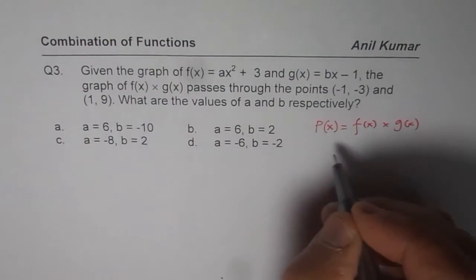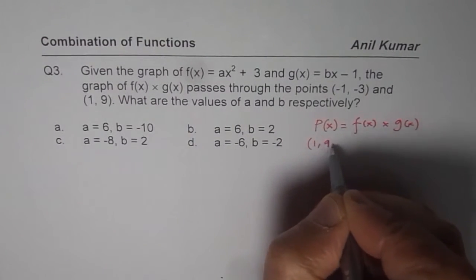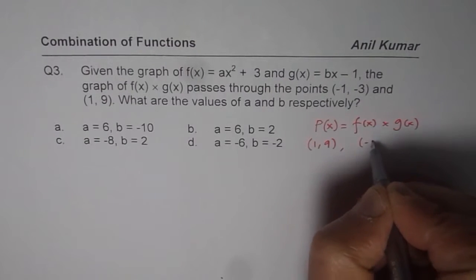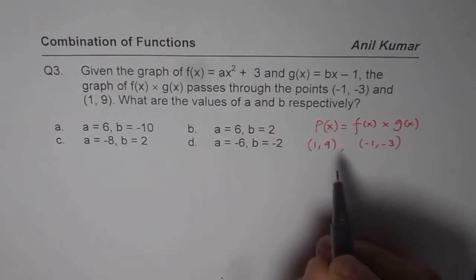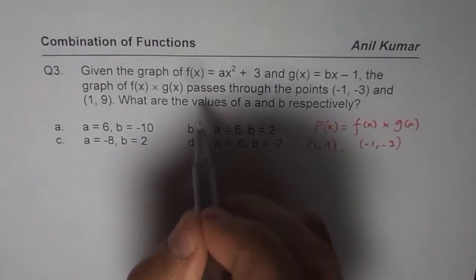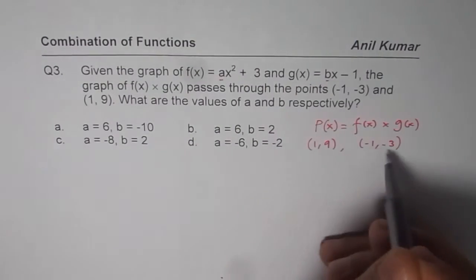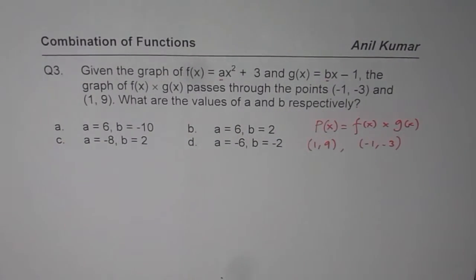Now, you can substitute these 2 points. The points are 1, 9 and minus 1, minus 3. So, we have 2 variables, a and b. Using these 2 points, you can find these variables. So, that is how it has to be solved.